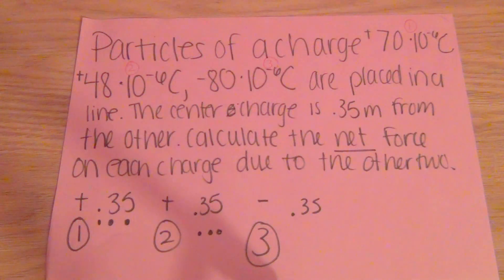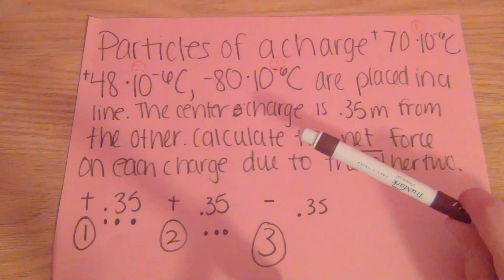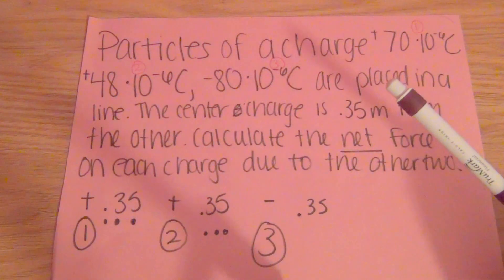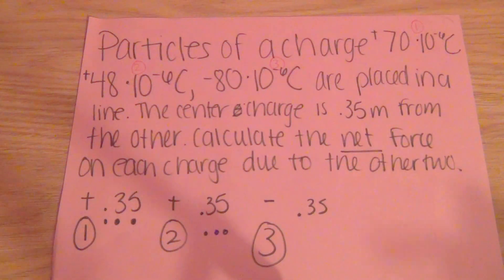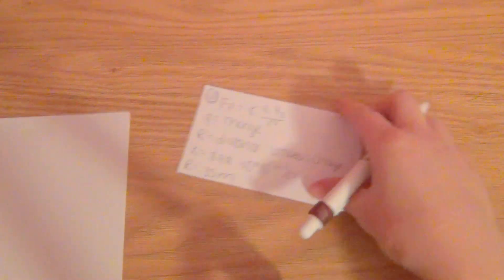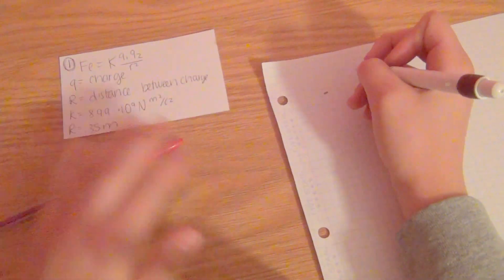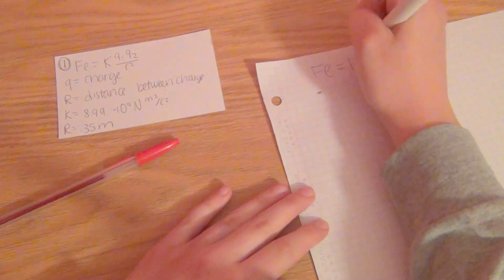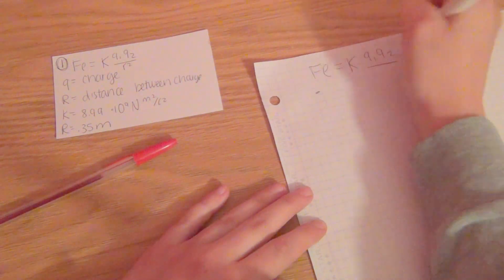From this problem, we know that the first particle is 70 times 10 to the negative 6, the second particle is positive 48 times 10 to the negative 6, and the third particle is negative 80 times 10 to the negative 6. After looking at the problem, we have to know what we're looking for — the net force on each charge. We know we're going to use the formula F_e equals K times Q1 times Q2 divided by R squared.